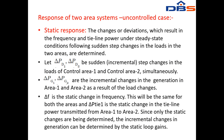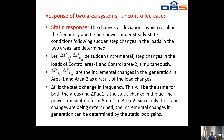Two area system uncontrolled case: the static response of a two-area system in the uncontrolled case. The deviations that result in frequency and tie-line power under steady state conditions following sudden step changes in the loads in the two areas are determined. Let delta PD1 and delta PD2 be step changes in loads of control area one and area two simultaneously, and delta PG1 and delta PG2 are the incremental changes in generator output in area one and area two as a result of the load changes.